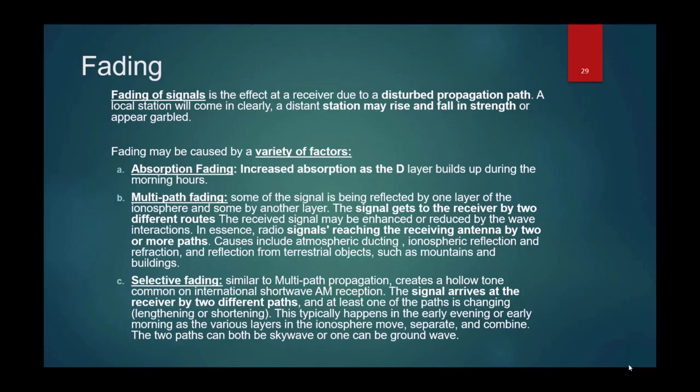Fading has a variety of factors. We have absorption fading where there's increased absorption and the D layer builds up during morning hours, or during solar flares where the D layer gets heavily ionized and absorbs almost all signals. We have multipath fading where you would have a direct wave and then a ground reflected wave where the signal is out of phase by 180 degrees and when they recombine they can potentially cancel each other out. You can also have selective fading where you have two different paths to get there at almost two different times and that can cause some issues in the receiver.